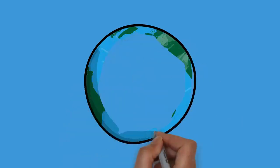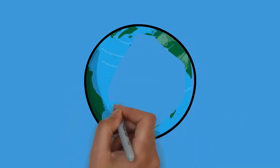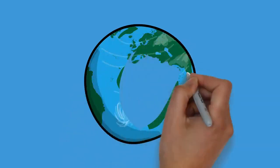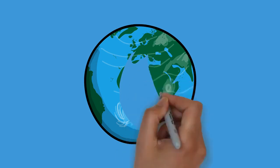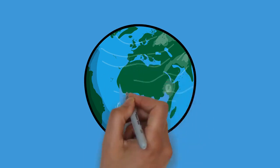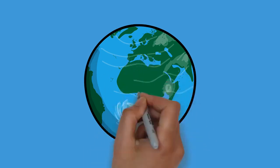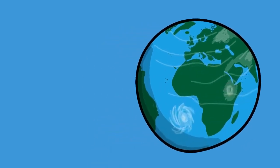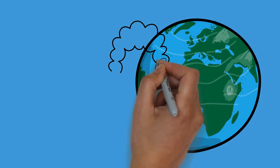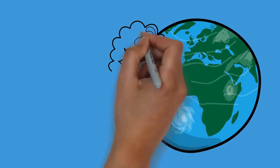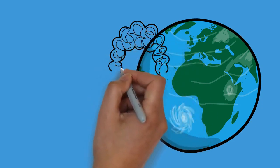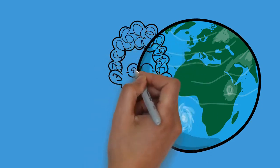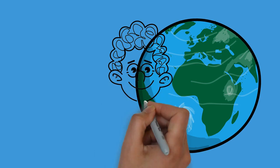Ageing, or aging in American English, is the process of becoming older. The term refers mainly to humans, many other animals, and fungi, whereas for example, bacteria, perennial plants, and some simple animals are potentially biologically immortal.